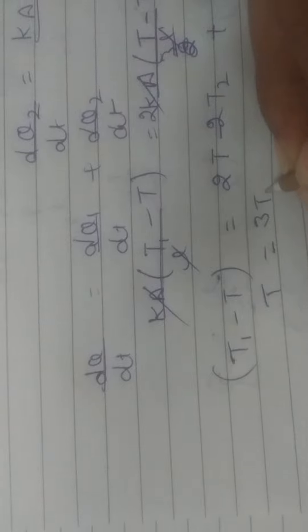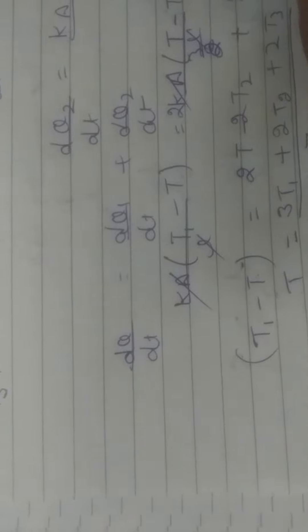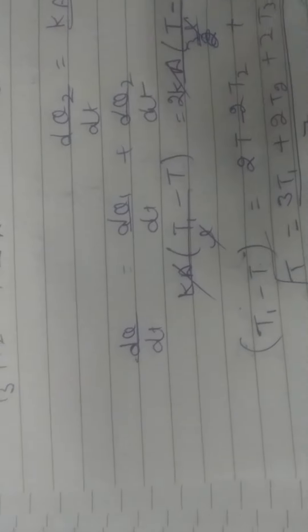Therefore, T equals 3T1 plus 2T2 plus 2T3 divided by 7. That is the answer.